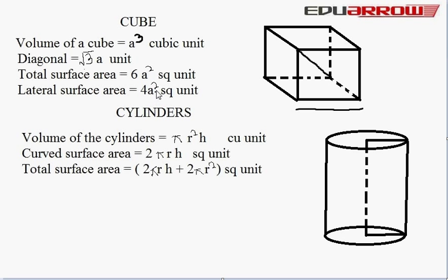Now we read cylinder. Volume of the cylinder is equal to πr²h. Here πr² is the area of the upper surface and h is the height of the cylinder. Curved surface area is equal to 2πrh — in curved surface area we take only the rounded region, we do not take the upper and lower surface. Total surface area is equal to 2πrh + 2πr².